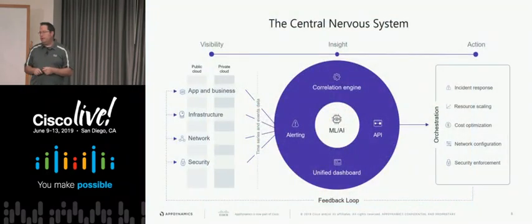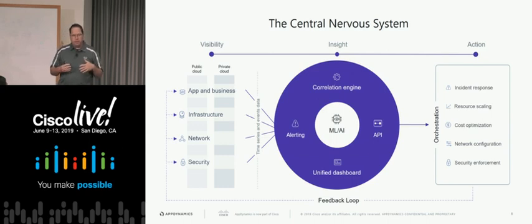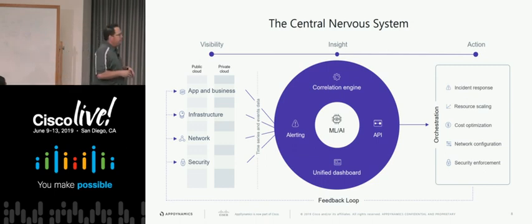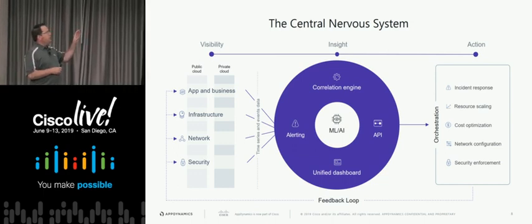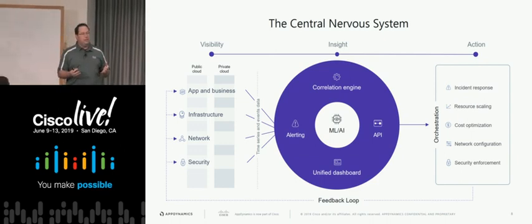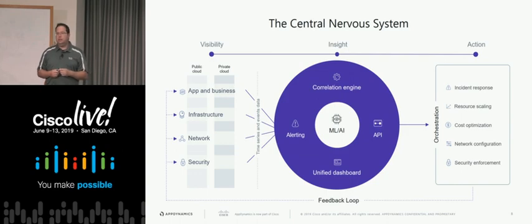This is something we like to talk a lot about at Cisco and AppDynamics — we call it the central nervous system. The main goals here are to create visibility and give you insight into what's going on in your application and infrastructure, and at the end of the day, provide an opportunity to take action based on that so you're making intelligent decisions. What AppDynamics is trying to do is bring visibility into this complex space, then provide correlation with all the different metrics and events we're collecting, so you can take action and make the process easier for you and your company.